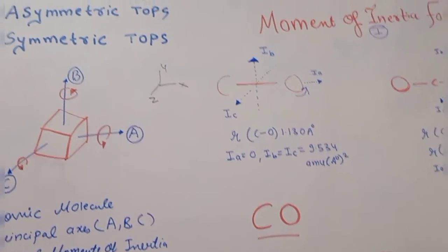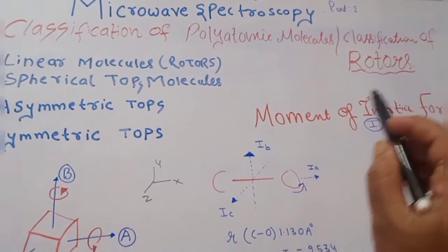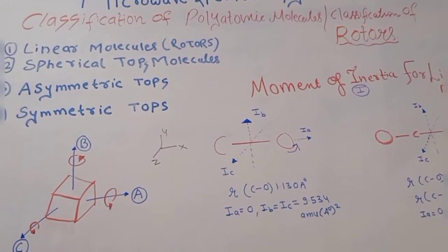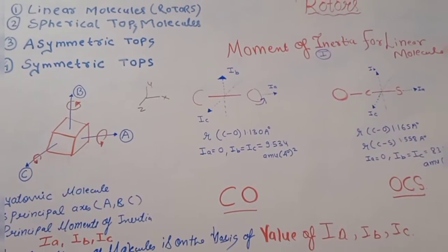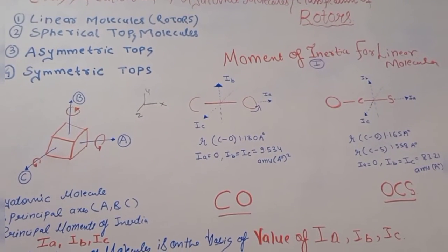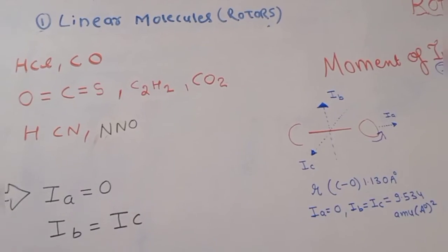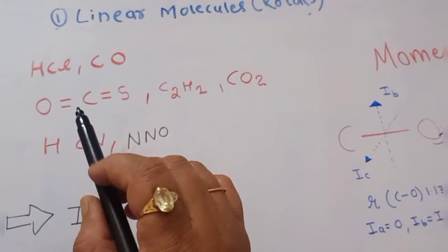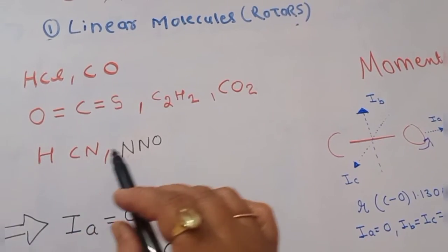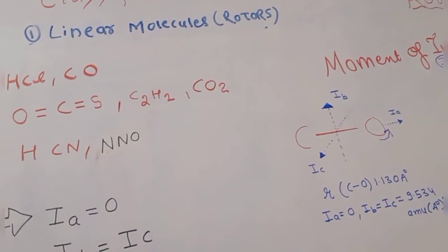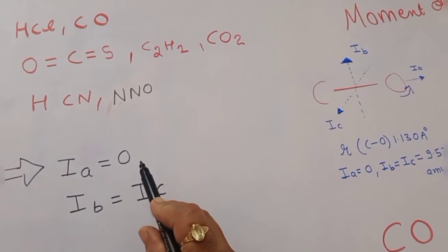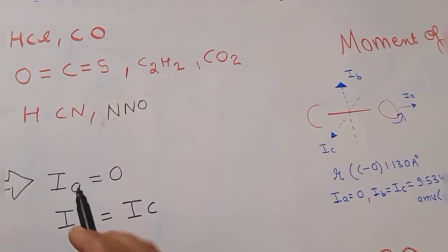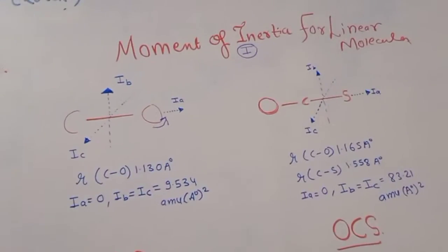The four types of rotors are: linear rotors, spherical tops, asymmetric tops, and symmetric tops. For linear molecules or linear rotors — examples include CO, OCS, C2H2, CO2, SCN, and NNO — the key condition is that Ia = 0 and Ib = Ic.